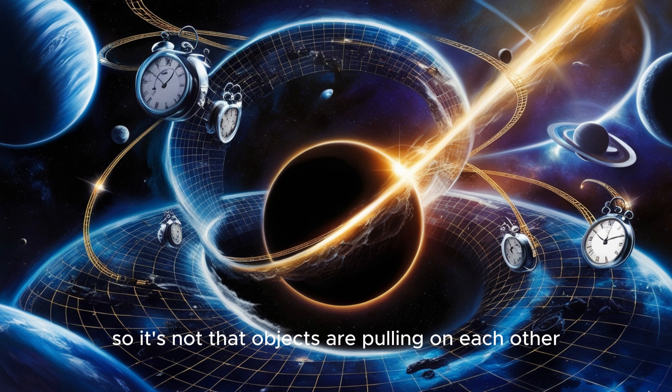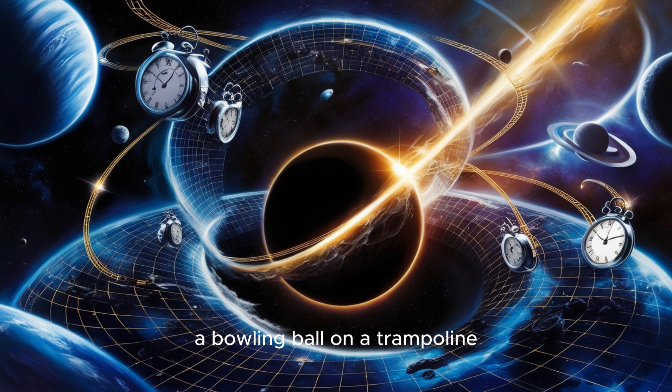So imagine massive objects like stars and planets. They actually warp this fabric of space-time, and that warping is what we experience as gravity. So it's not that objects are pulling on each other. It's more like they're following the curves created by these massive objects in space-time. Exactly. The article uses this analogy of a bowling ball on a trampoline. The bowling ball creates a dip in the trampoline, and if you roll a marble nearby, it'll curve inward towards the bowling ball.